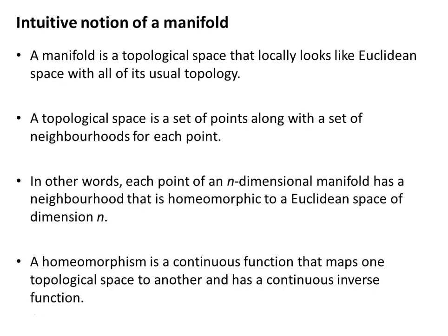Let's have a look at the intuitive notion of a manifold. We can think of a manifold as a topological space that locally looks like Euclidean space with all of its usual topology. Take any small region around any particular point on that manifold, and you'll find that it looks approximately flat, approximately Euclidean.